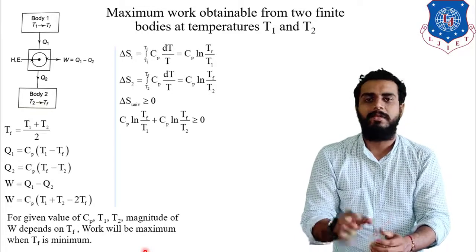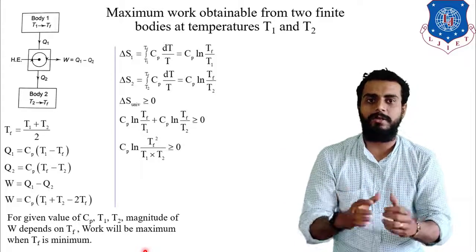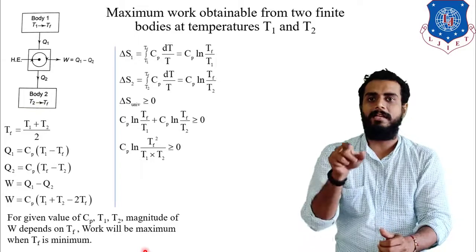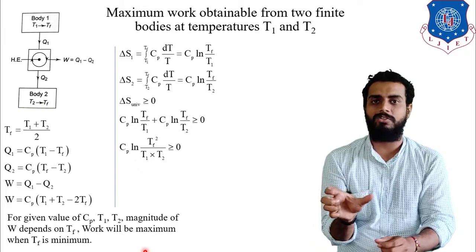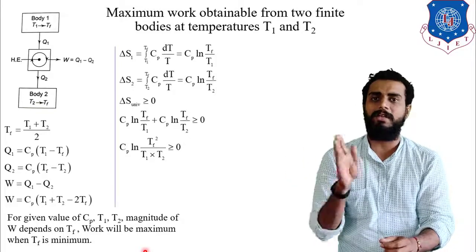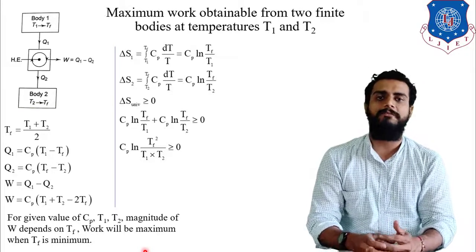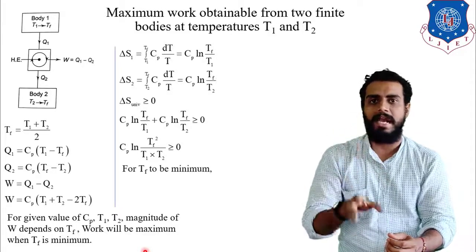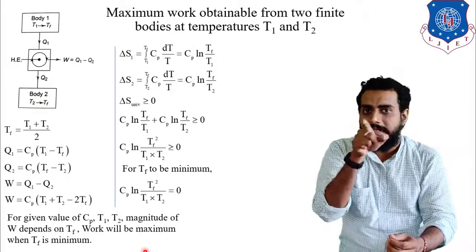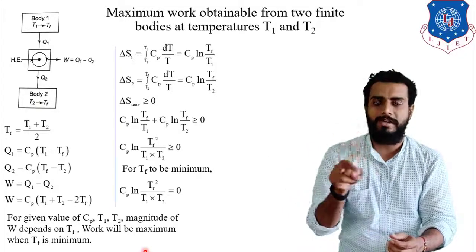Taking Cp as common and applying the logarithm addition rule, we get Cp·ln(Tf²/T1T2) ≥ 0. To minimize Tf, the process must be reversible, replacing the ≥ sign with equality: Cp·ln(Tf²/T1T2) equals zero.